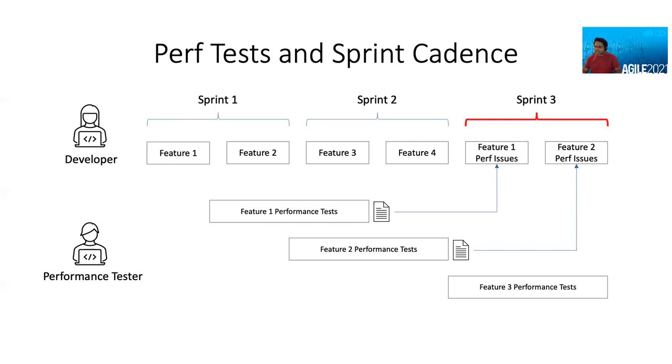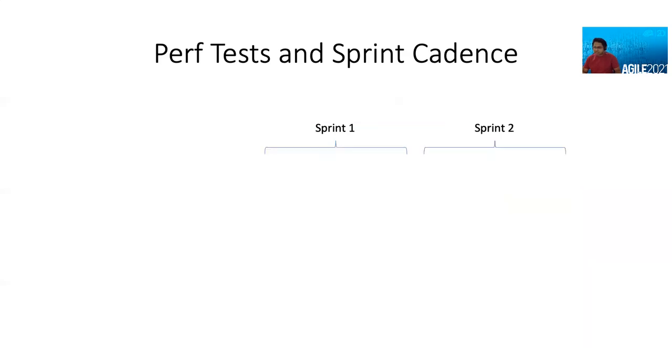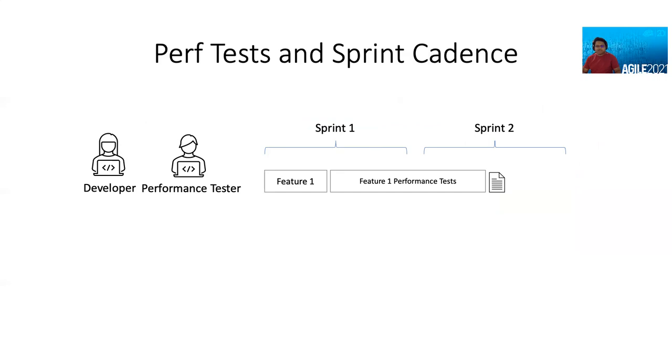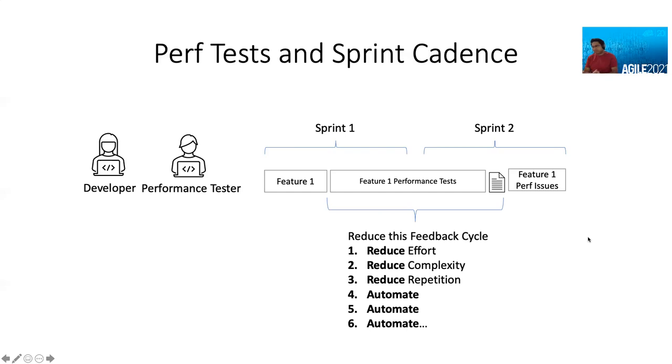So how do we go about solving this problem? The first thing is to come to terms with what is the reality, which is, if the performance tester and the developer collaborate, once the feature is done, they do the performance testing together, they identify the issues, and then fix them. Now, that takes two sprints. And this is the best case scenario. So what do we do? We have to reduce the feedback cycle. We reduce effort, we reduce complexity, and we reduce repetition. And you automate all the way to resolve this problem.